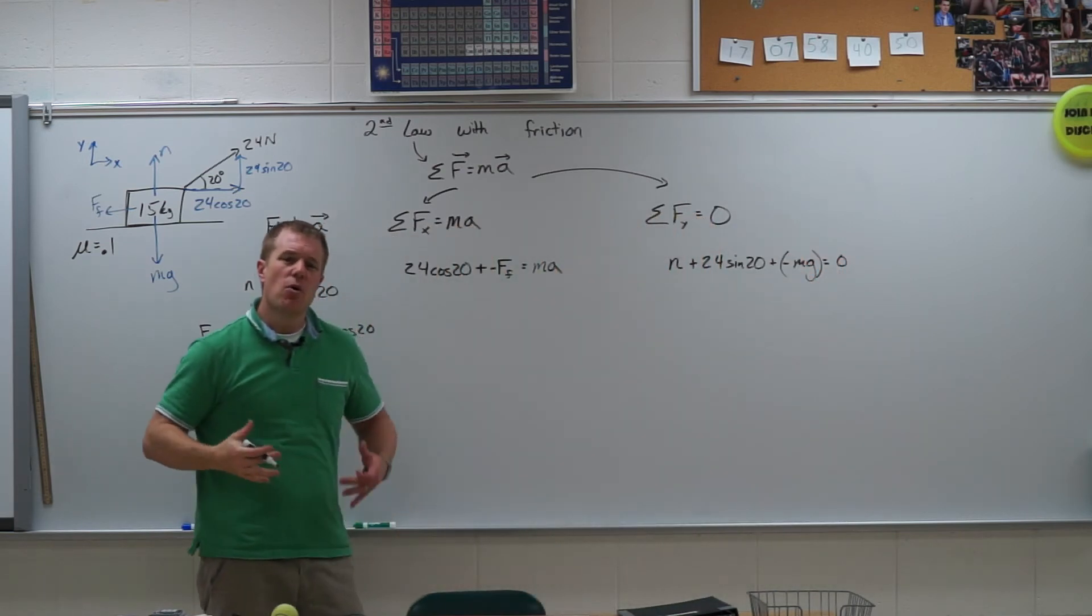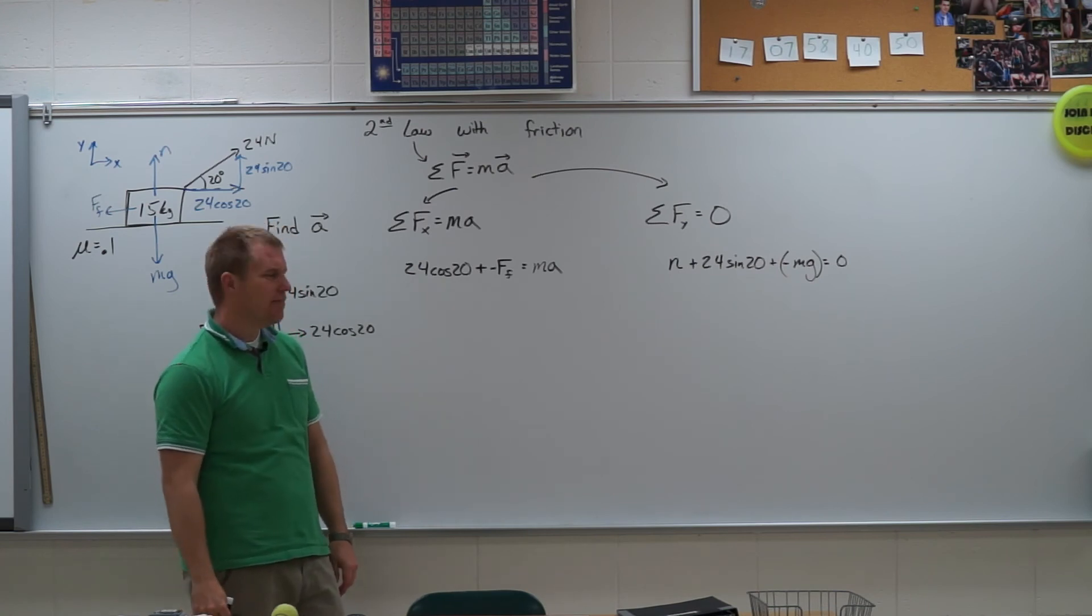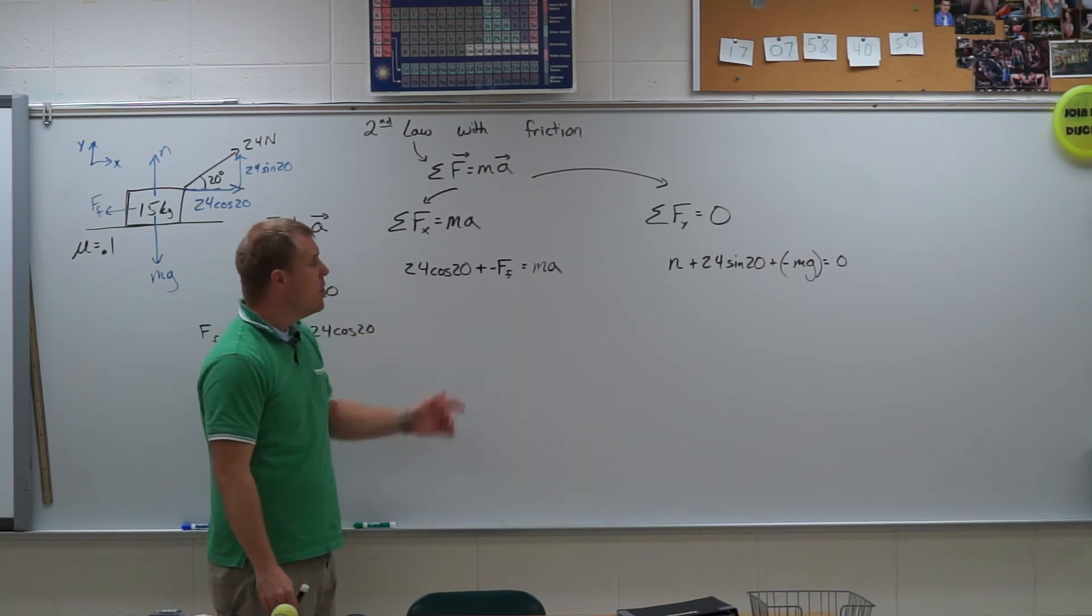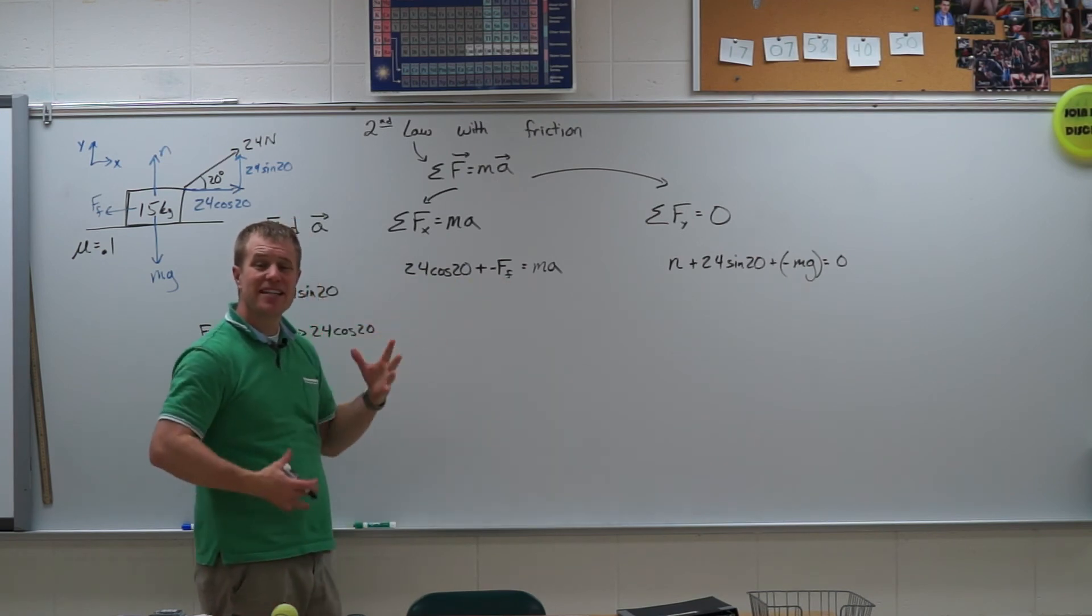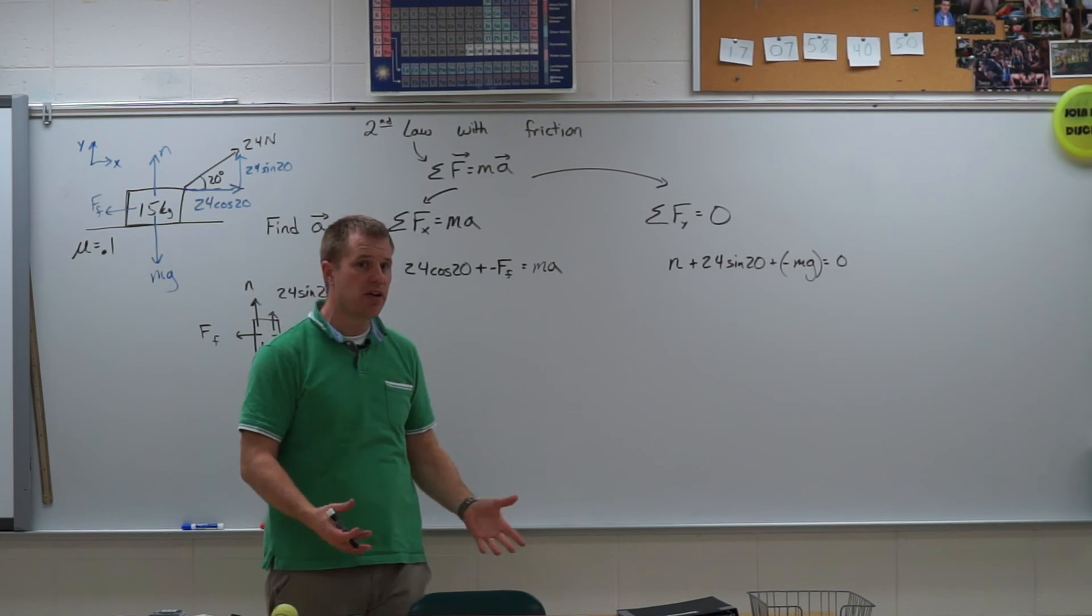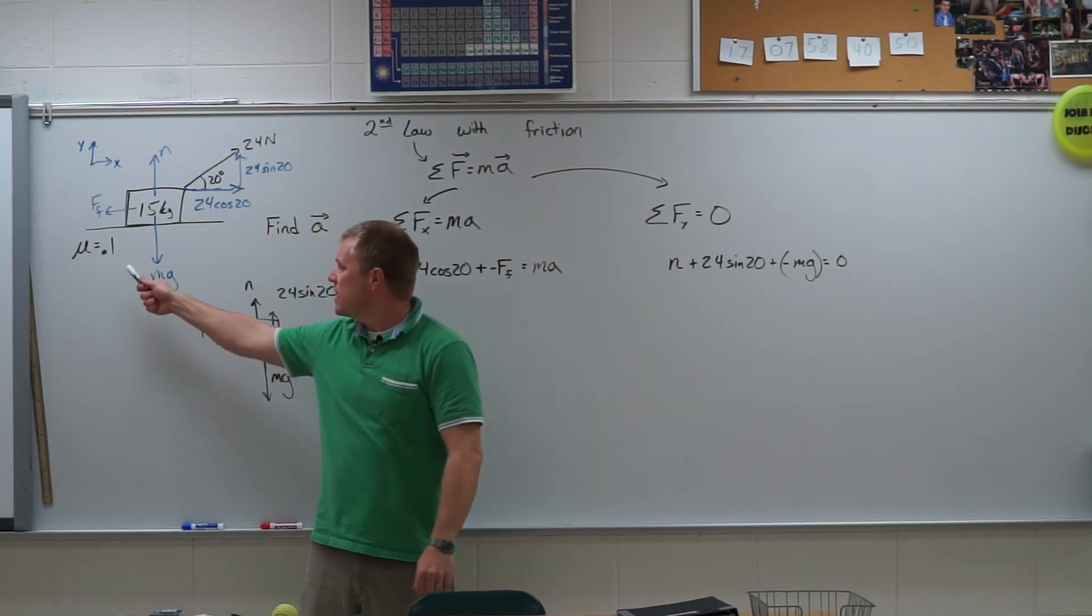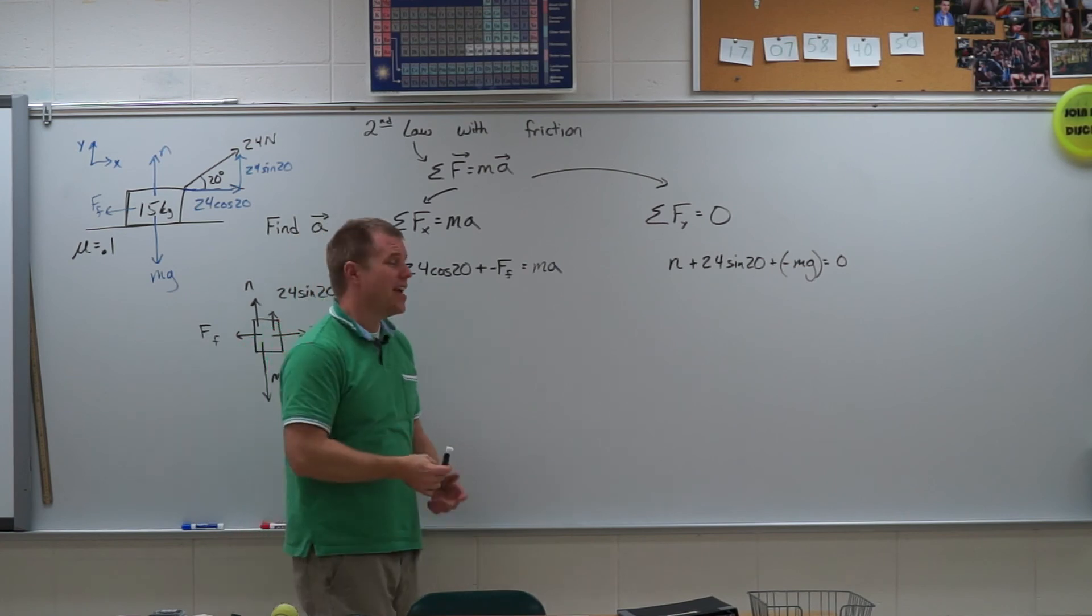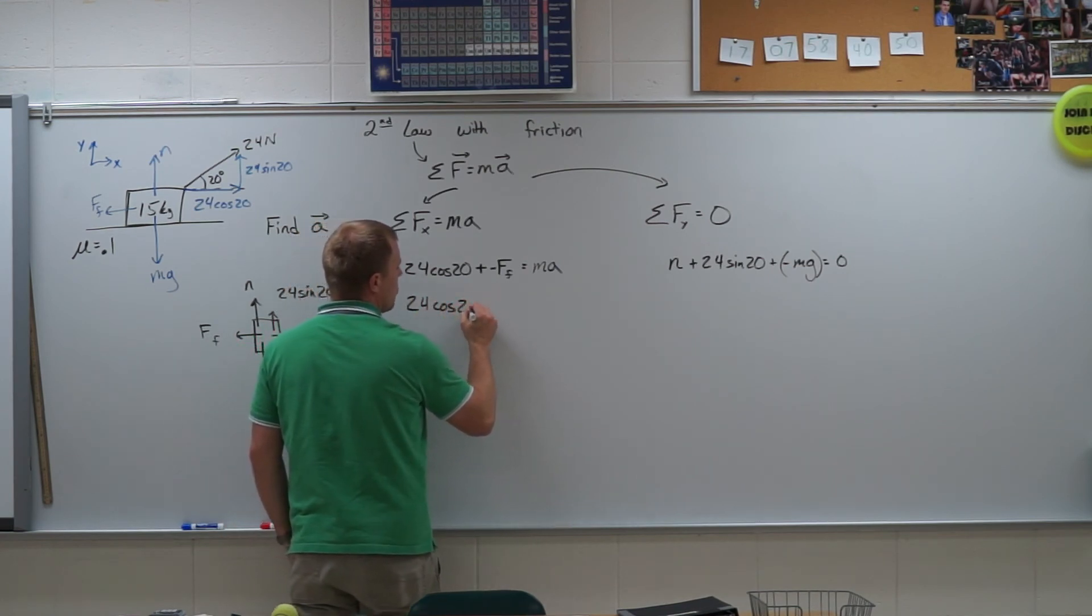Again there's that negative. We're going to get in the habit of changing that to just a minus instead of doing plus negative every time. When we have friction problems a big thing here is we are going to typically substitute. Unless they tell me the force of friction value or I'm trying to find it, we're going to make a substitution here. Since they gave me the coefficient of friction, yes I'm going to substitute. So I have 24 cosine of 20